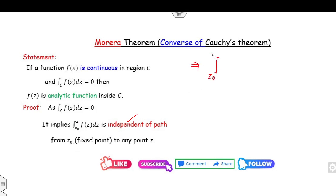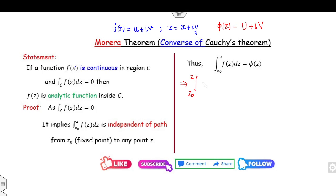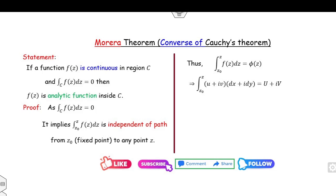This means you can say this function φ(z) is a function of z, because it is independent of the path and totally dependent on z. Now since f is a continuous function, I can write f(z) = u + iv where z = x + iy. I can consider φ(z) as a function of the complex variable, written as U + iV. Your target is to prove f(z) is analytic.